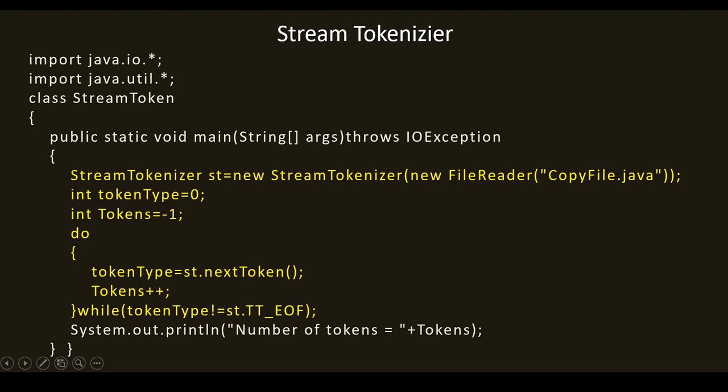There are two integer variables. The first is tokenType, declared as 0, and the second is tokens, initialized to minus 1. tokenType is used to check whether the end of file has been reached — once it becomes end of file you stop. The reason for initializing tokens to minus 1 is that a do-while loop is used; with tokens++, it automatically starts from 0, so the count will be correct.